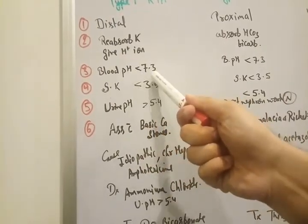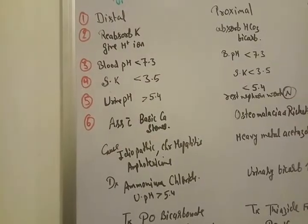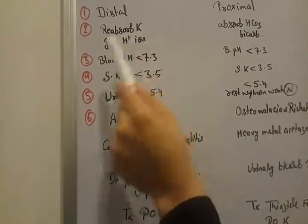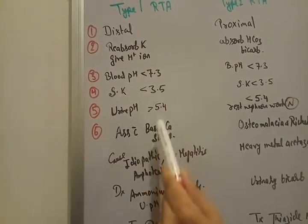So the blood pH going to be less. It is acidic due to H plus accumulation. And what about the urine pH? If urine is not mixed with H plus ion, that is why the urine pH going to be up. In basic side.